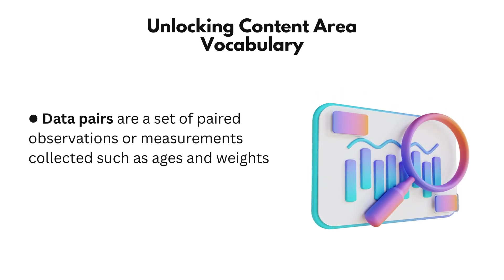When we say data pairs, we're talking about two pieces of information that go together, like a pair. In math, data pairs are a set of paired observations or measurements collected for two related variables. Sounds a bit technical. Don't worry, let's make it simple.